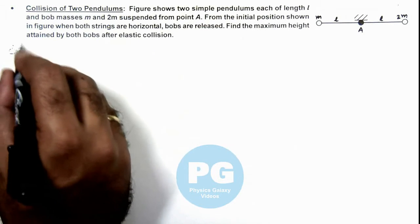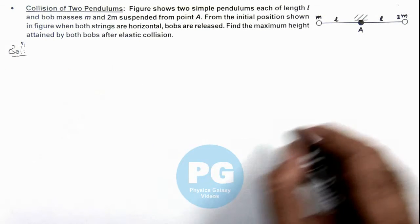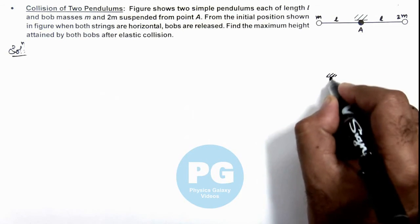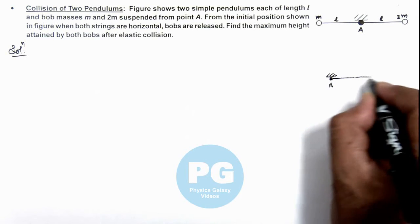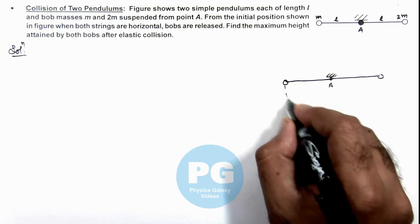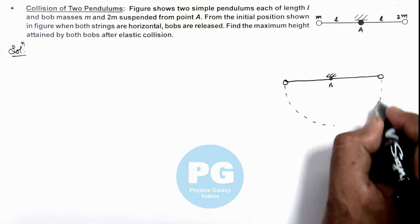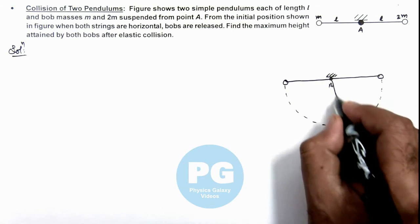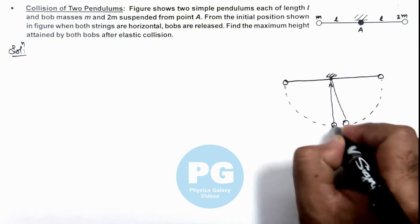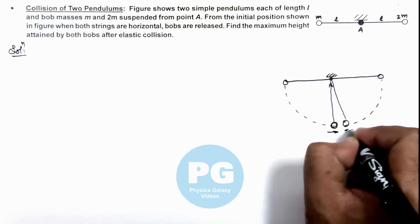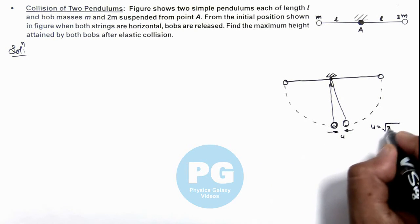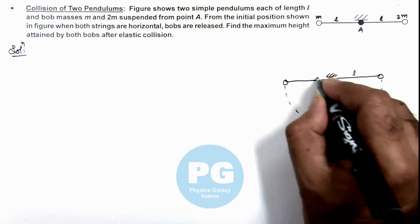Here in this situation, we can see when these two bobs are released from rest from point A, they will fall and at the bottommost point the two pendulums will collide with equal speeds u and u. The value of u is equal to root 2gl, as both are falling from a height of l.